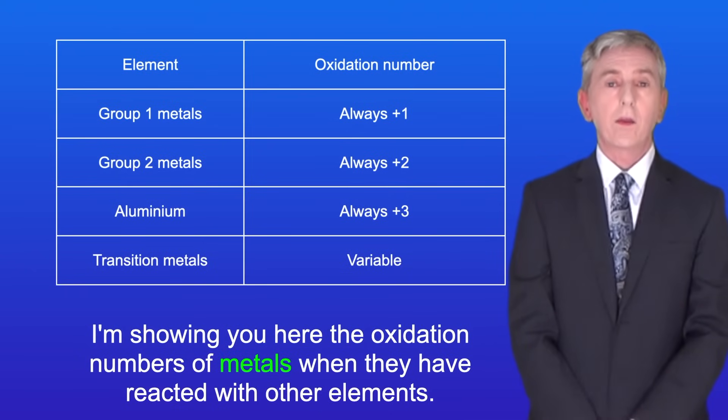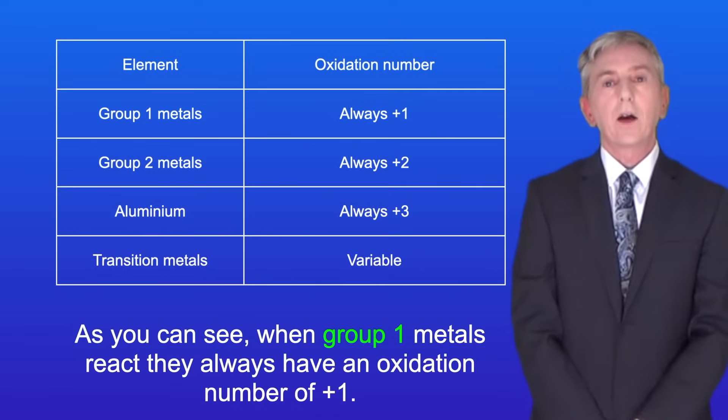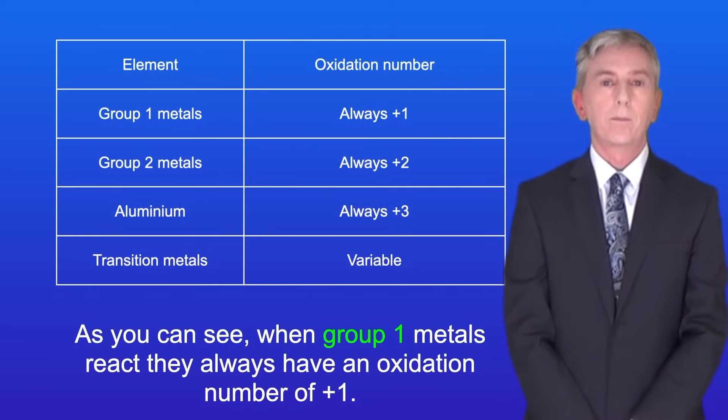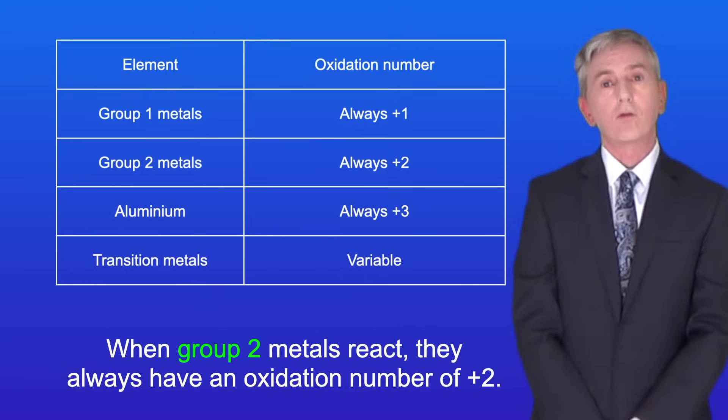Okay, I'm showing you here the oxidation numbers of metals when they've reacted with other elements. As you can see, when group one metals react, they always have an oxidation number of plus one. And when group two metals react, they always have an oxidation number of plus two.